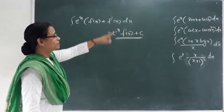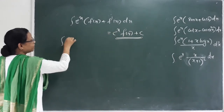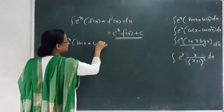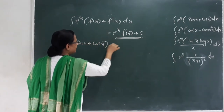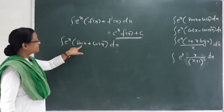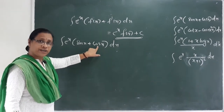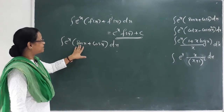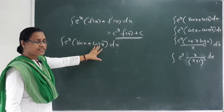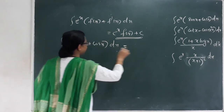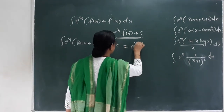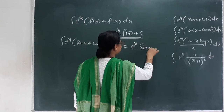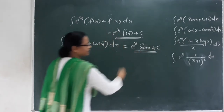The first question is ∫e^x · (sin x + cos x) dx. Here, cos x is the derivative of sin x, so we identify that f(x) = sin x and f'(x) = cos x. The answer is e raised to x · sin x + C. This is the answer.